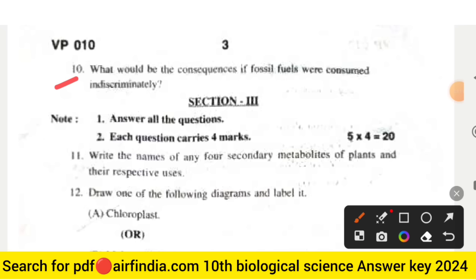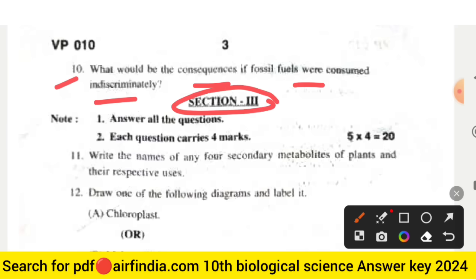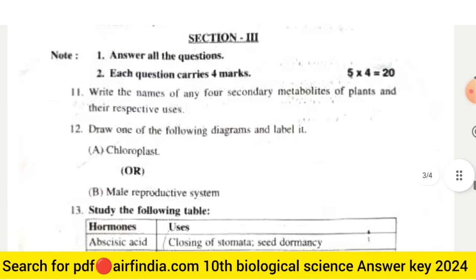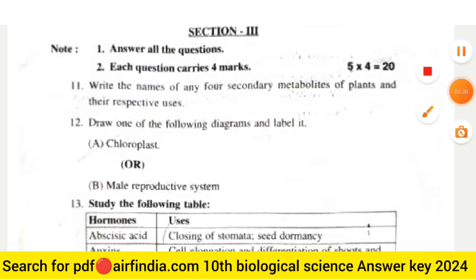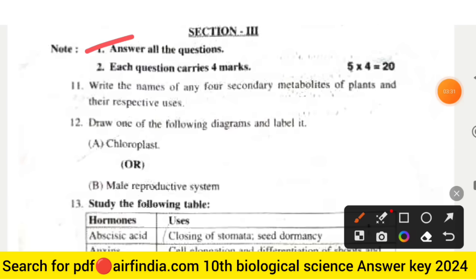Question number ten: what would be the consequences if fossil fuels were consumed indiscriminately? Section three is 20 marks — answer all the questions, each question carries four marks. Question number eleven: write the name of any four secondary metabolites of plants and their respective uses.